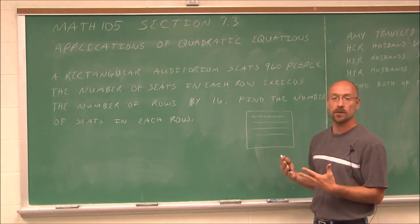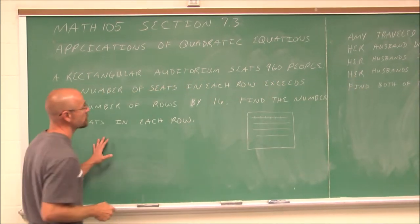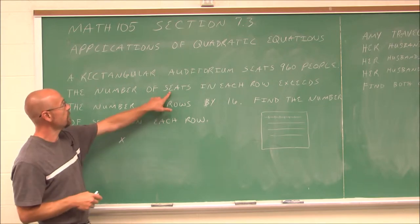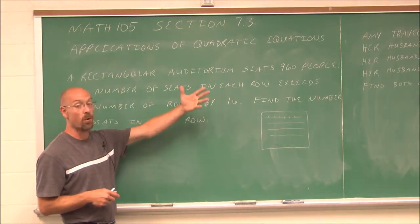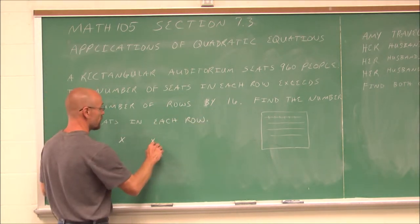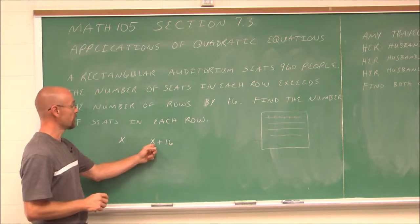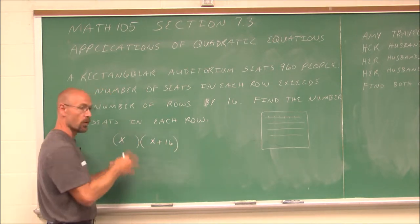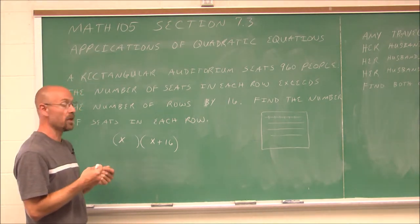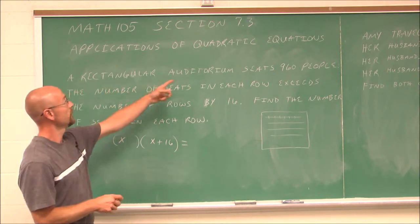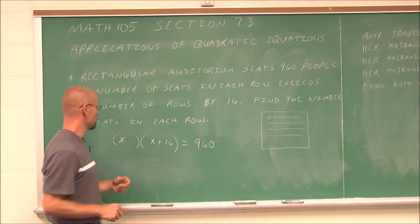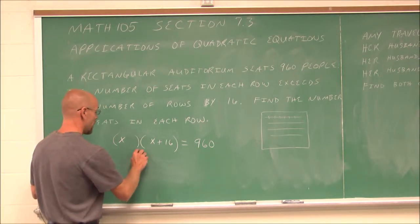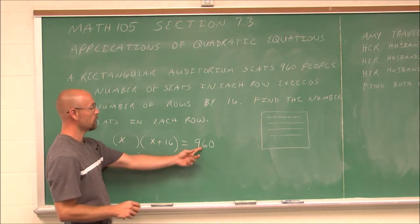We have to determine what our variable is going to be. I'm going to assign x to the number of rows, because I don't know how many rows there are. But I am told that the number of seats exceeds — more than — the number of rows by 16. So the number of seats is going to be x plus 16. If I multiply these, the number of rows times the number of seats equals 960 people. So I get x squared plus 16x equals 960.